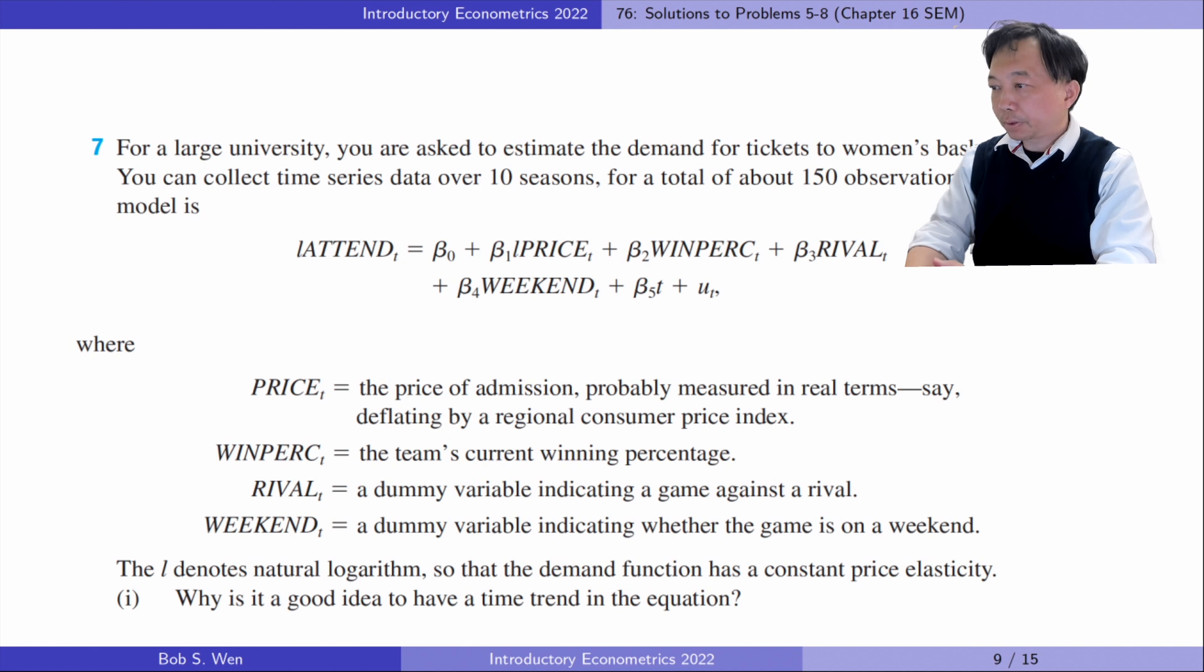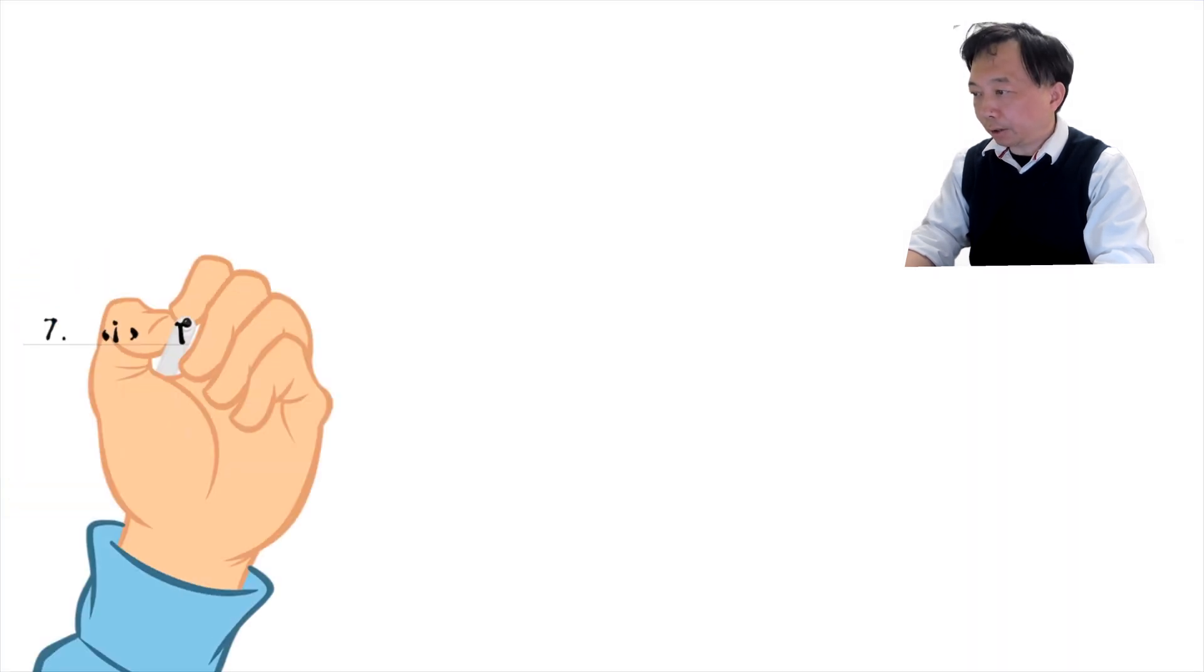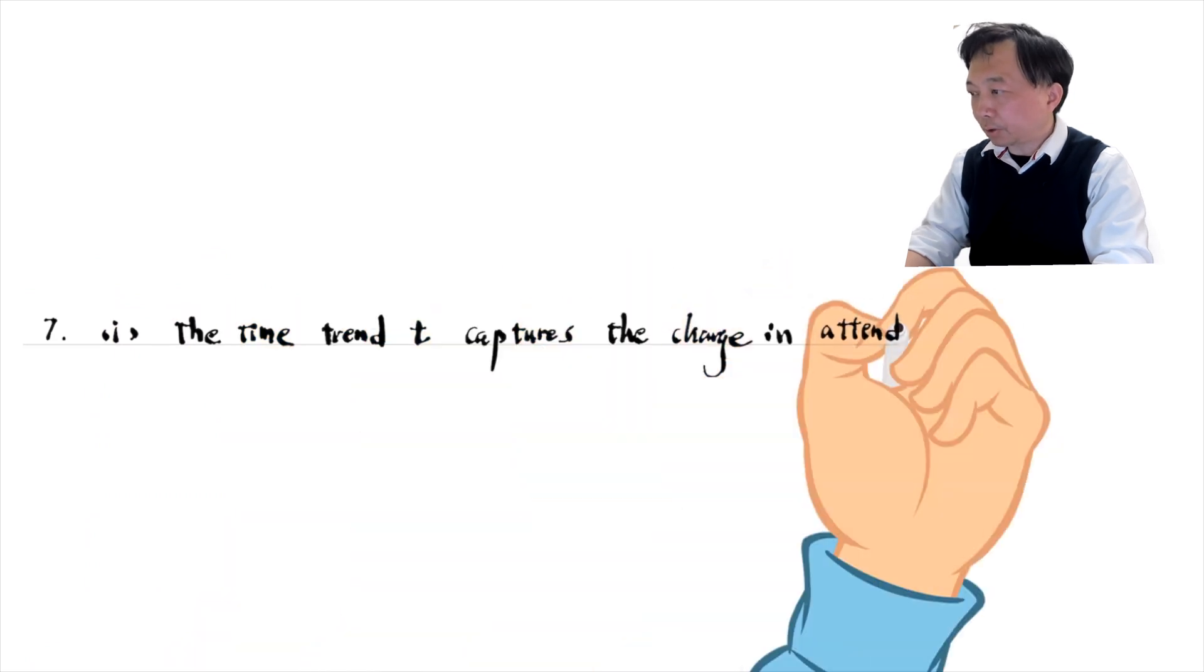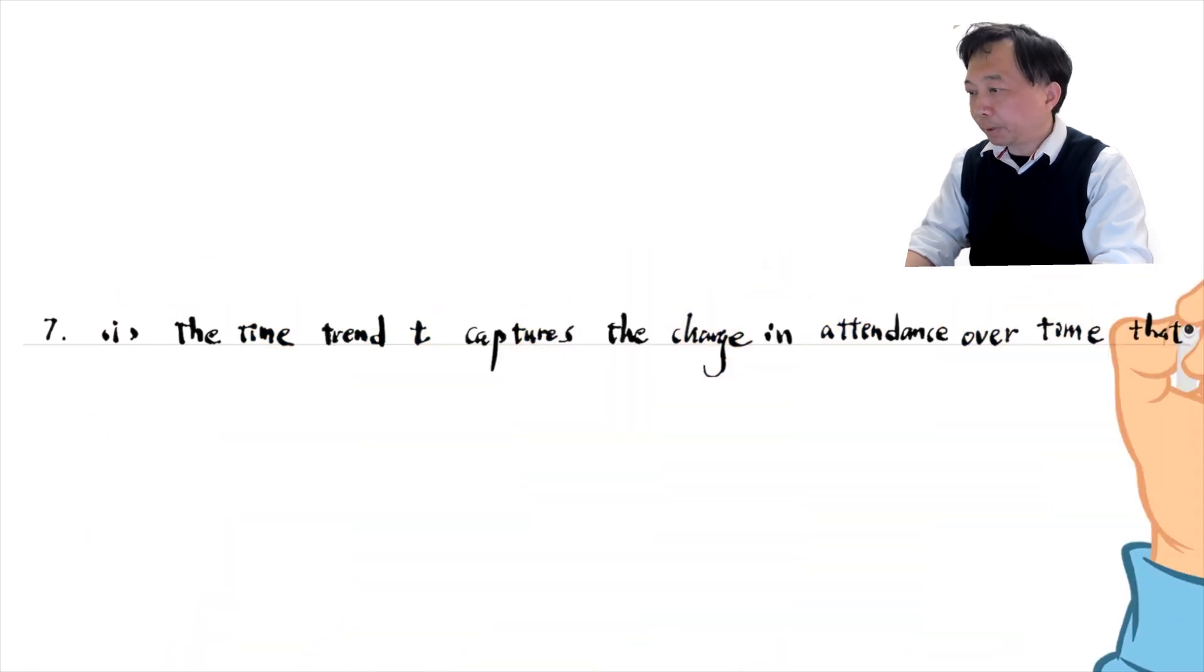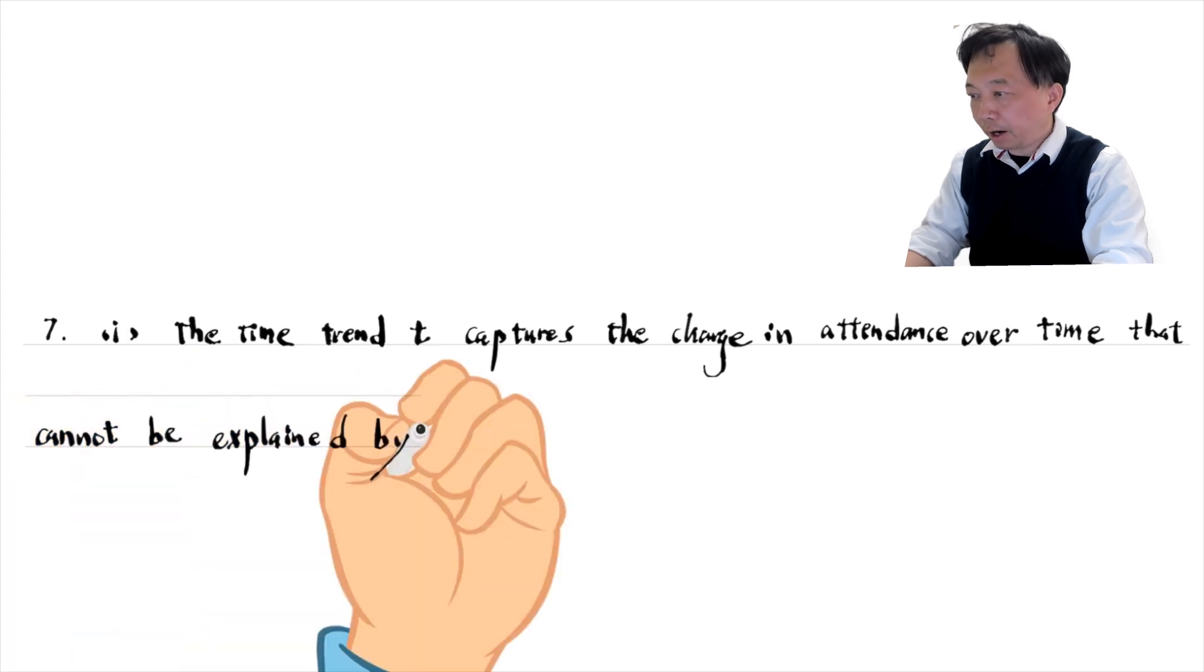Let's do problem seven. For a large university, you are asked to estimate the demand for tickets to women's basketball games. You can collect time series data over 10 seasons for a total of about 150 observations. The model is as follows. In part one, why is it a good idea to have a time trend in the equation? Because the time trend captures the change in attendance over time that cannot be explained by the explanatory variables in the model.